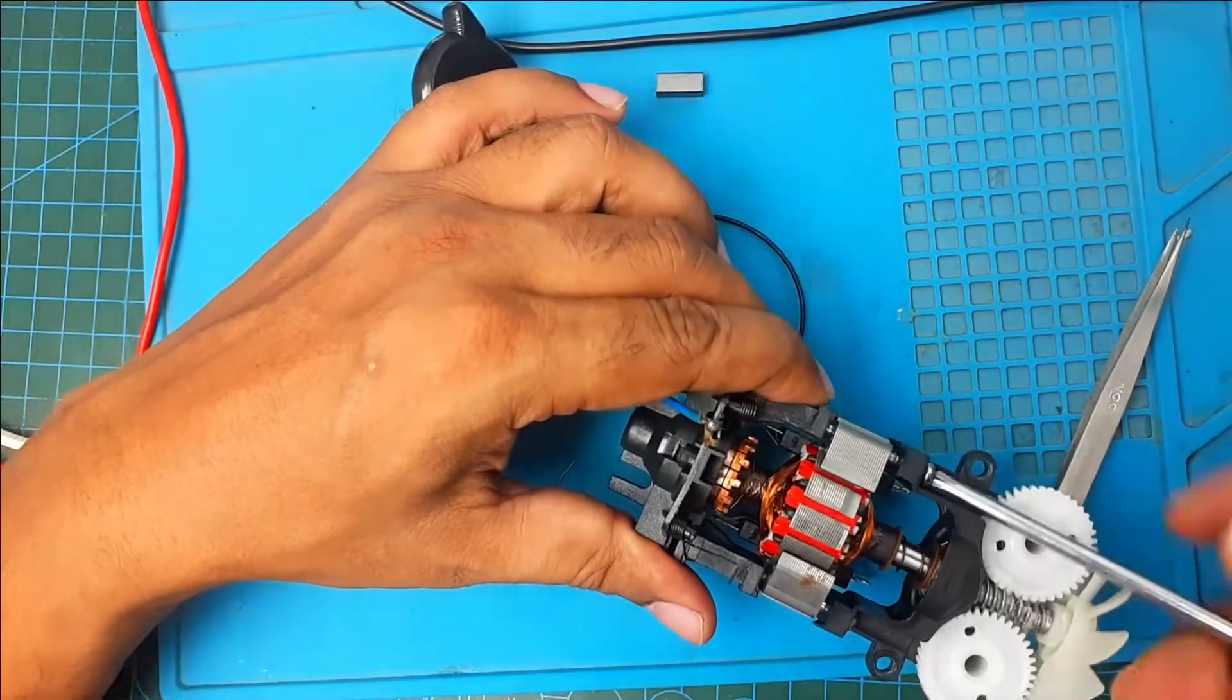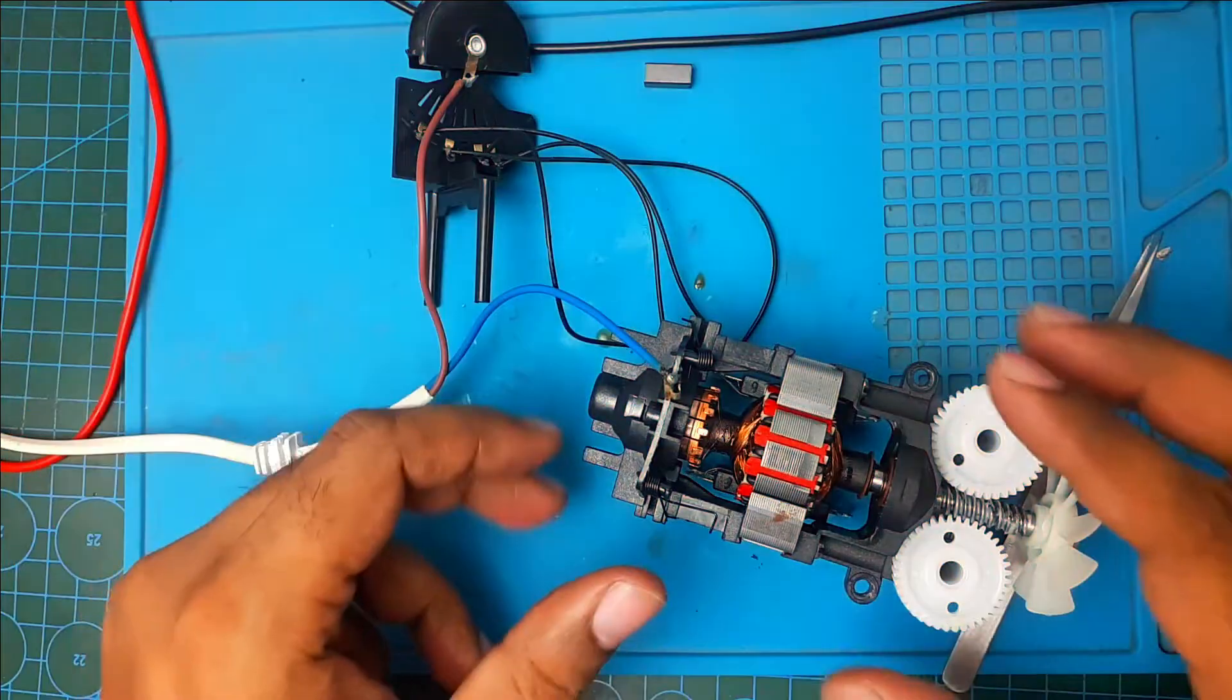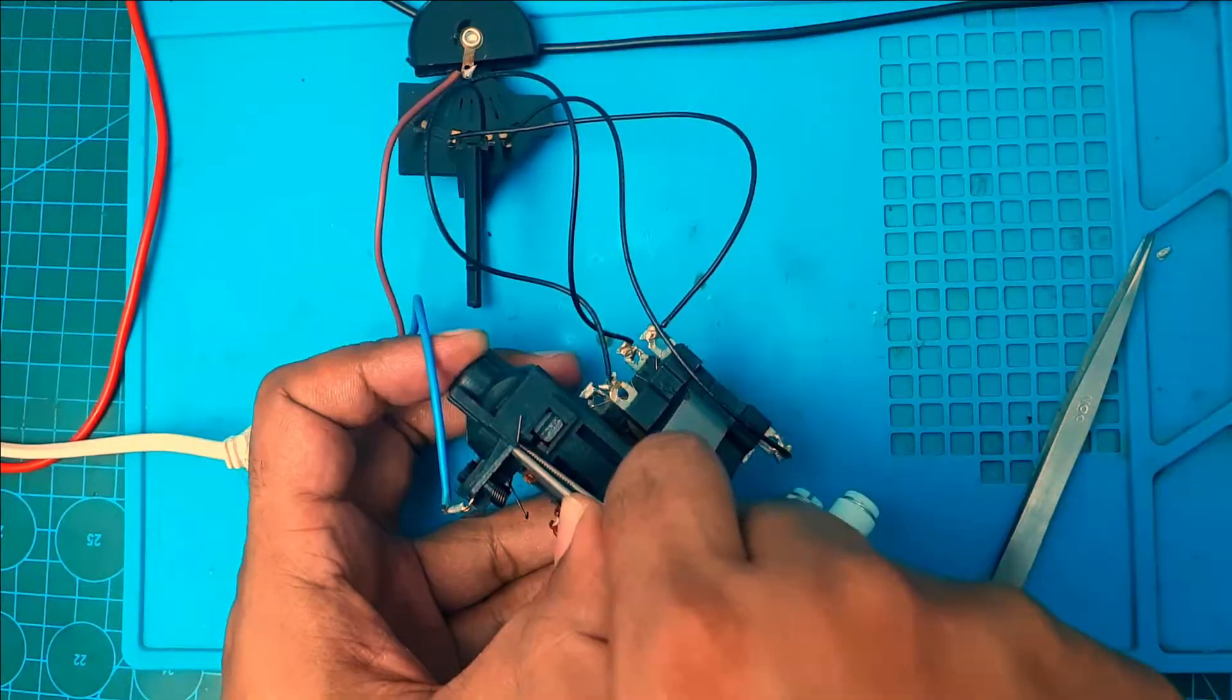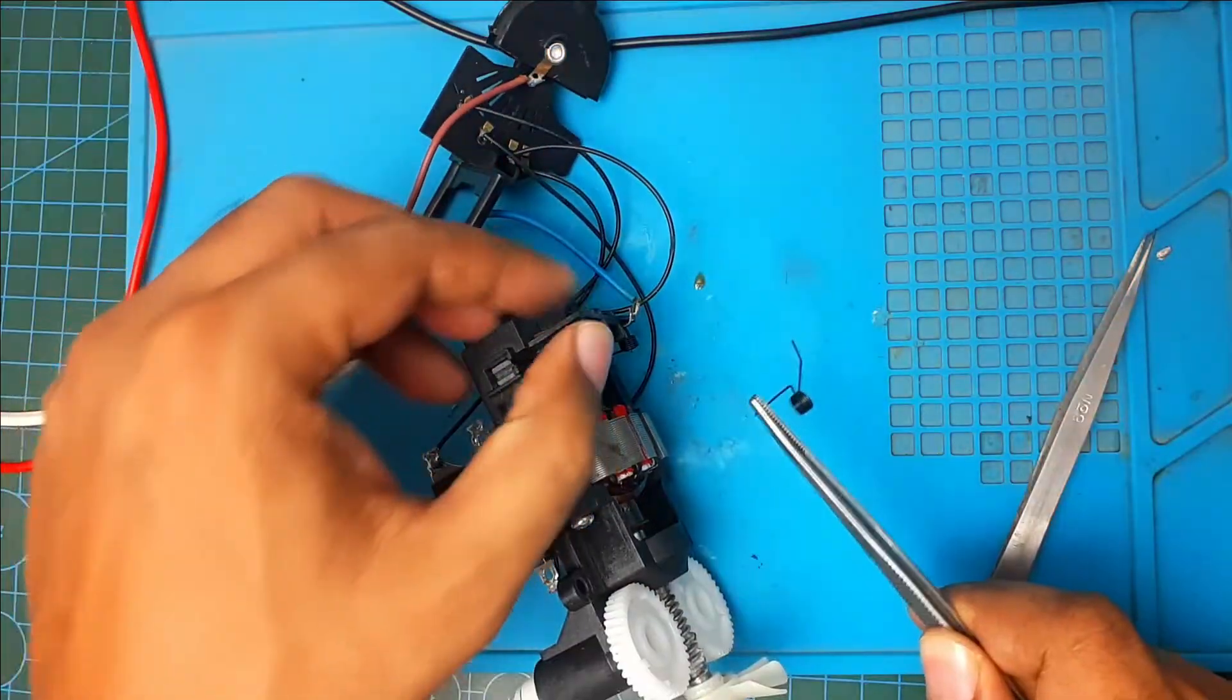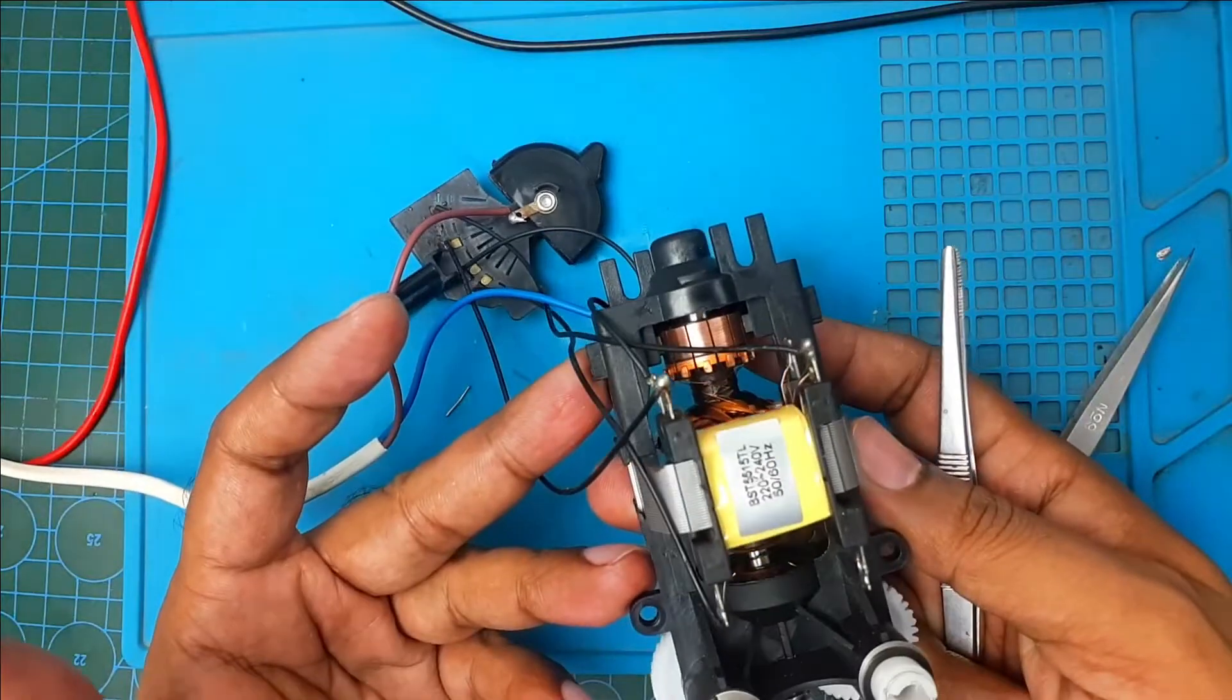Screw it. First screw the motor. Okay, screw the motor and now we have to put our carbon in place and the spring to carbon. But I'm lucky because I found it. Oh no, I think I make a mistake. I make a mistake.